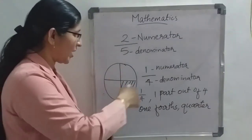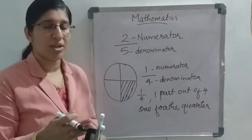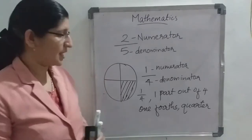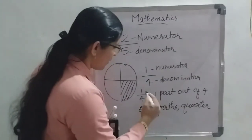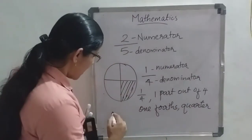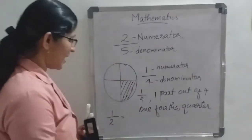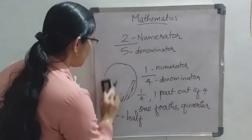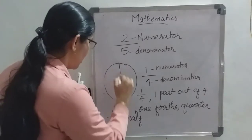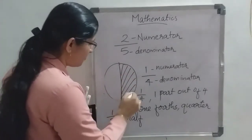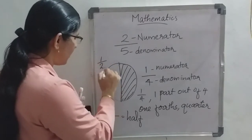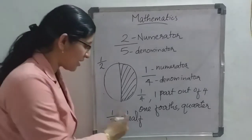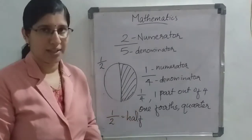So 1 by 4 is called quarter. And 1 by 2 — we can say in another word — that is half. Suppose a cake is cut into 2 equal pieces and I take 1 piece, the fraction is 1 by 2. So 1 by 2 means half of that. 1 by 2 means half, and 1 by 4 means quarter.